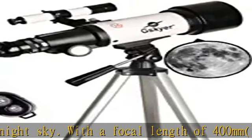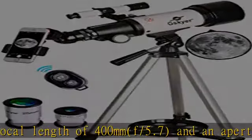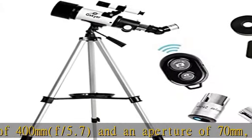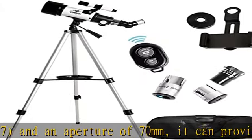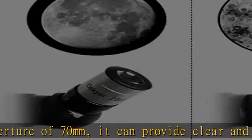the fully coated optics glass lens with high transmission coatings can help to reduce reflections and increase the amount of light that reaches the eyepiece, resulting in brighter and more vibrant images.